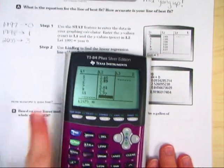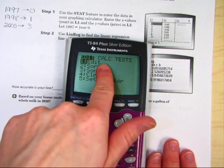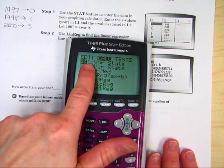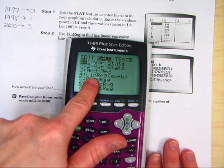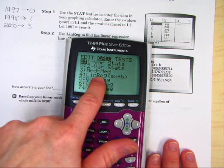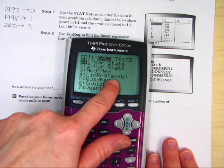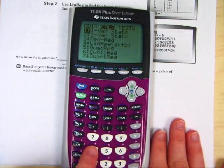Step two. You're going to hit stat one more time. You're going to go over to the calculate feature and you're going to go down and let's see what we've been doing. See where it says LinReg. That stands for linear, which is a straight line, and regression, which is the type of correlation. AX plus B. That's like MX plus B. So we're going to select number four by hitting the number four.